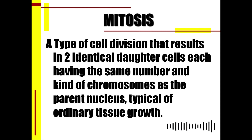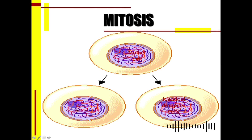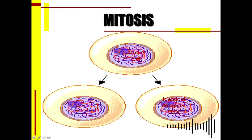Let's discuss mitosis. Mitosis is a type of cell division that results in two identical daughter cells, each having the same number and kind of chromosomes as the parent nucleus, typical of ordinary tissue growth. As shown in the illustration, one mother cell undergoes mitosis — a cell division — producing two identical daughter cells. The genetic material of the mother cell will automatically be the same in both daughter cells.